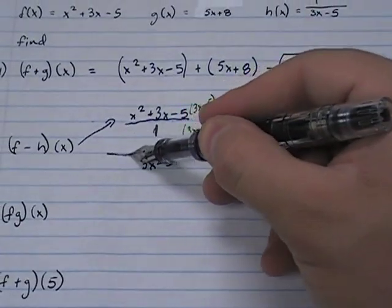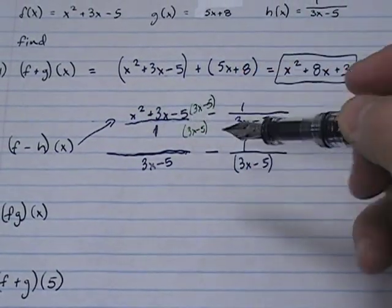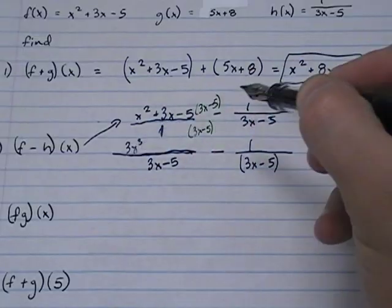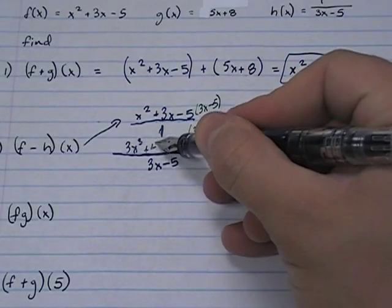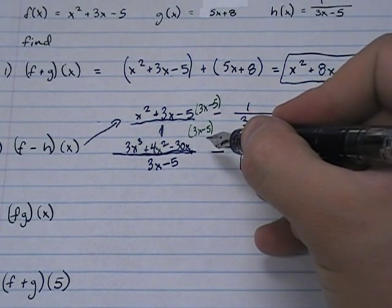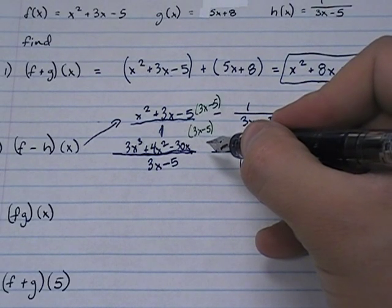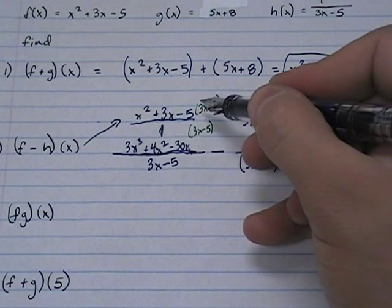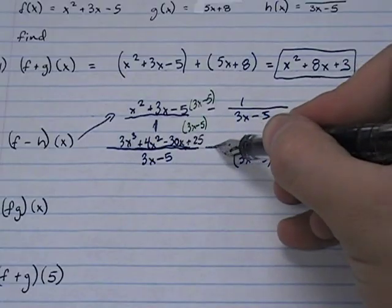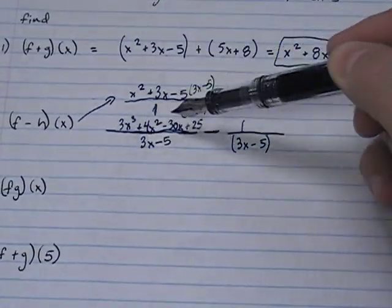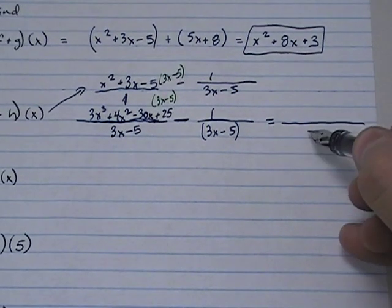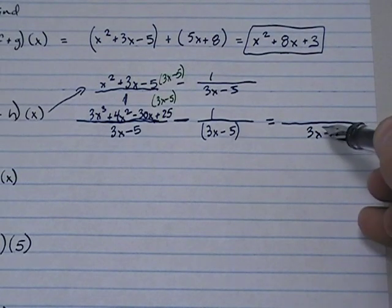The numerator is going to be the fun part, which is where you have to take this times that. What you end up with is 3x to the third plus 4x squared minus 30x plus 25. So now you've got this fraction and this fraction, and you combine the numerators. The denominator will not change. The denominator will remain 3x minus 5 because that's the common denominator.